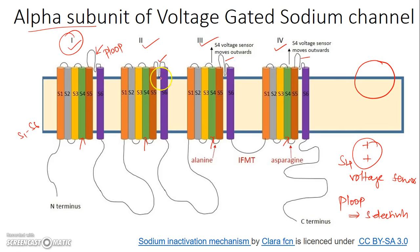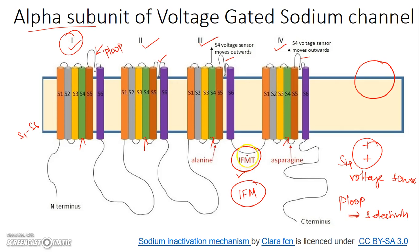The P-loop, which is the selectivity filter, is located between S5 and S6. There is also a group of hydrophobic amino acids between the S6 of the third domain and S1 of domain 4, called the IFMT or IFM domain. This IFM domain has affinity to bind to other hydrophobic amino acids like alanine located in the S4-S5 loop of domain 3, and there is one more binding site — asparagine between S4 and S5 of domain 4.